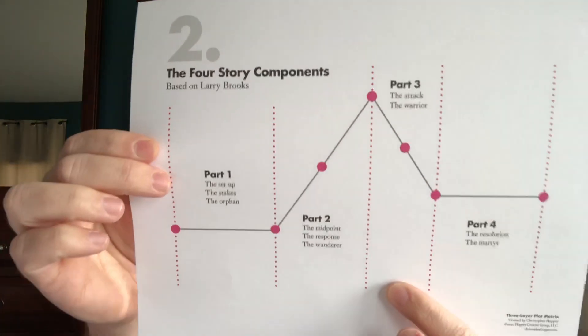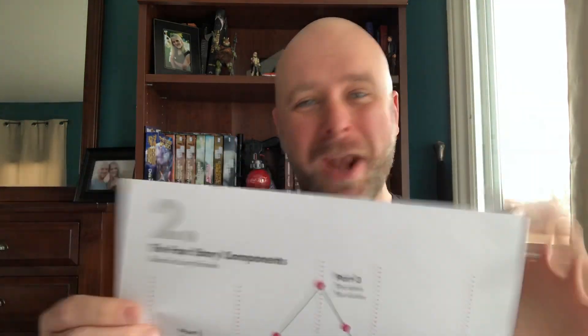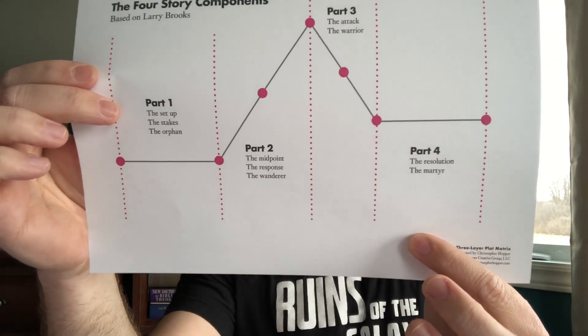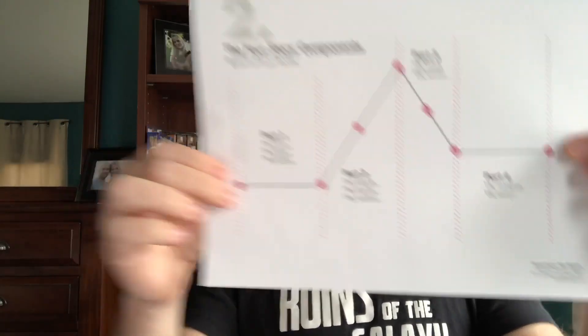Then we jump into part three, which is the attack — where the main protagonist becomes the warrior. They've been the orphan, they've been wandering, they've gotten information, and now they're in a place to actually refute and attack the enemy. If the enemy is some sort of environmental thing, it could be how they're weathering the storm. Whatever it is, they're in a position to go on the offensive in their world. The last part, part four, is the resolution, and it's where the main character becomes the martyr. This does not mean your protagonist has to die — it simply means they are giving up something of themselves in order to bring the story to a conclusion.